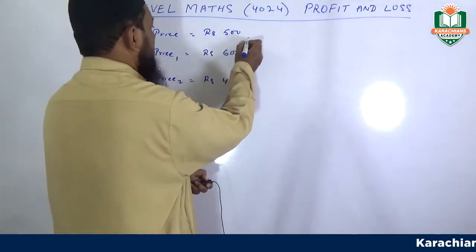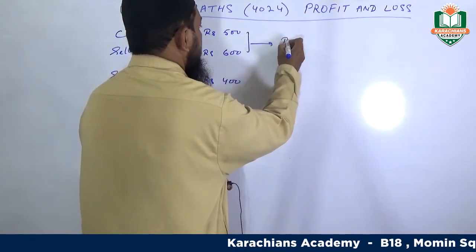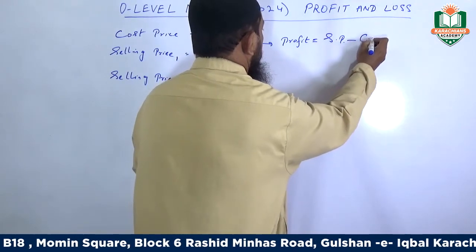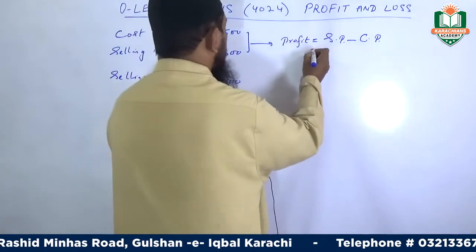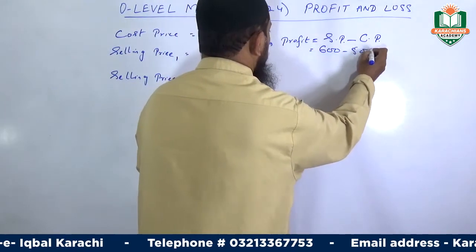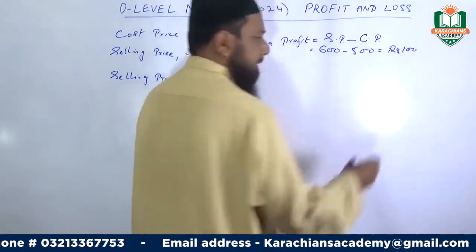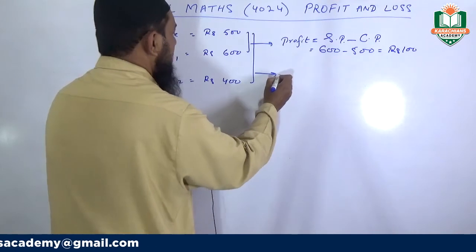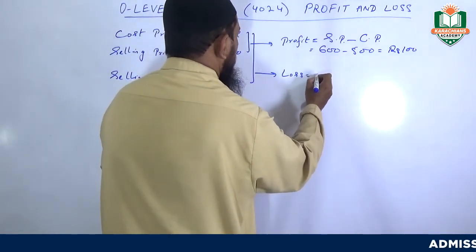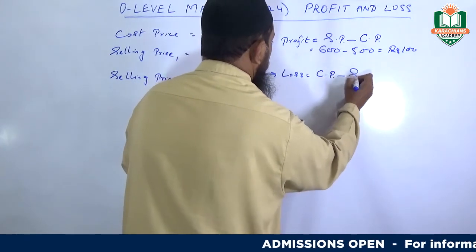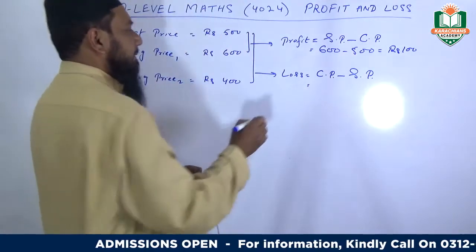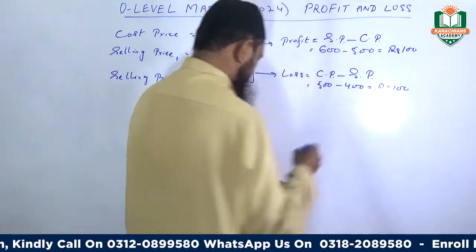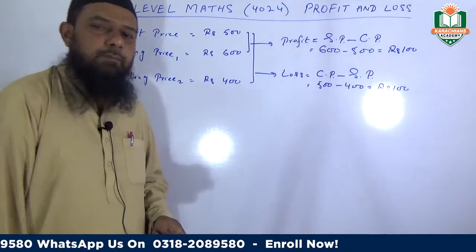Case number one: profit equals selling price minus cost price, that is 600 minus 500, which equals 100 rupees profit. Next, we have a loss: cost price minus selling price, which is 500 minus 400, and the loss is 100 rupees.